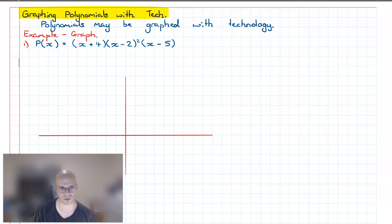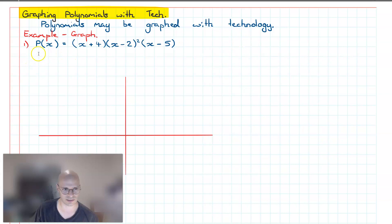Welcome to this video on the topic of polynomials and functions. In this video, we're going to have a look at how we can use technology to help us graph polynomial functions. Consider the function P of X equals X plus 4, times X minus 2 all squared, times X minus 5. We're going to use technology to first graph this.